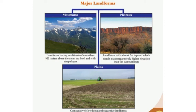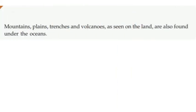What are plains? Plains are comparatively low-lying and expansive landforms. Mountains, plains, trenches and volcanoes seen on the land are also found under the oceans.